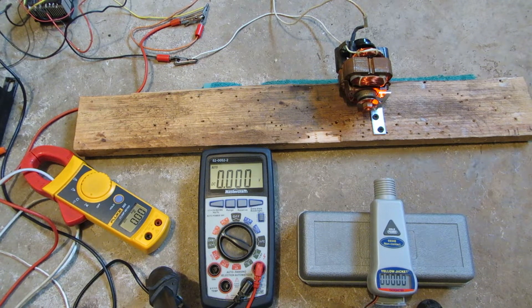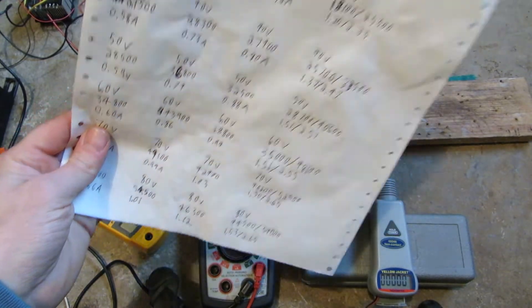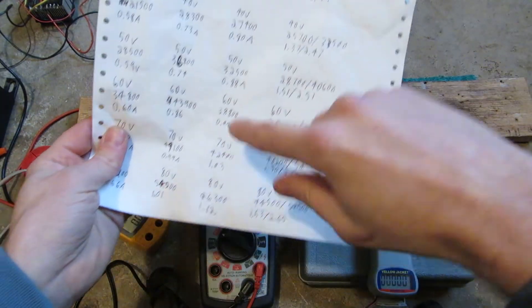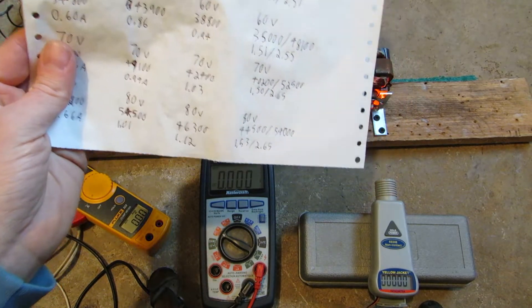All right, this is motor number three, which according to my data here, number three at 80 volts reached 46,300, about 1.2 amps. That was on AC.